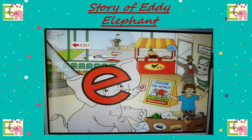Here is Eddie Elephant. He is off on another exciting expedition — he loves exploring the world. He has packed his bag with all sorts of things. He always takes lots of envelopes so he can send letters to his Letterland friends. He also has some exercise equipment, as Eddie loves to exercise — it gives him energy.